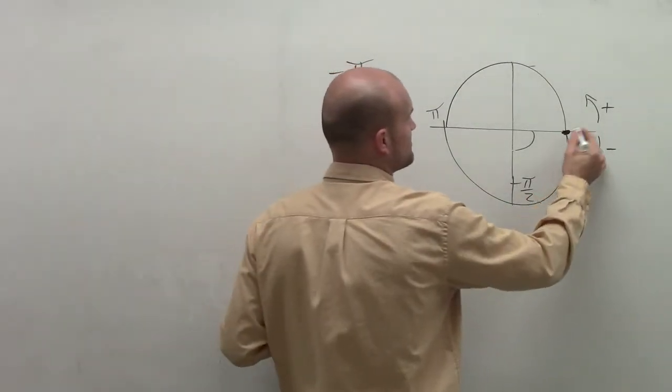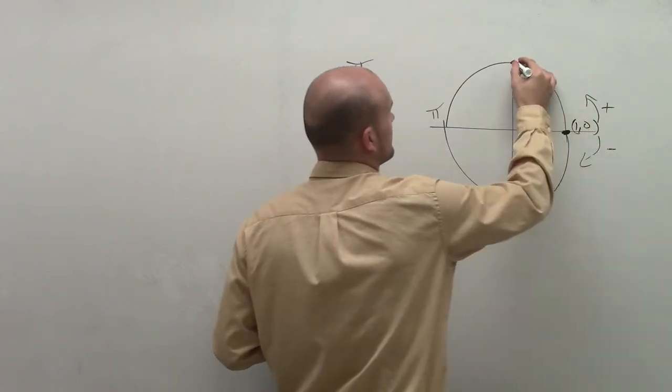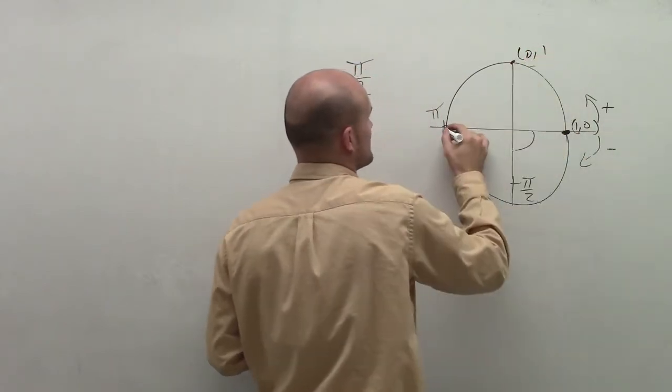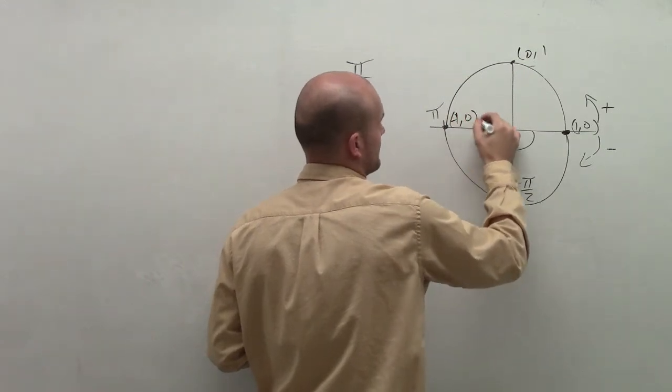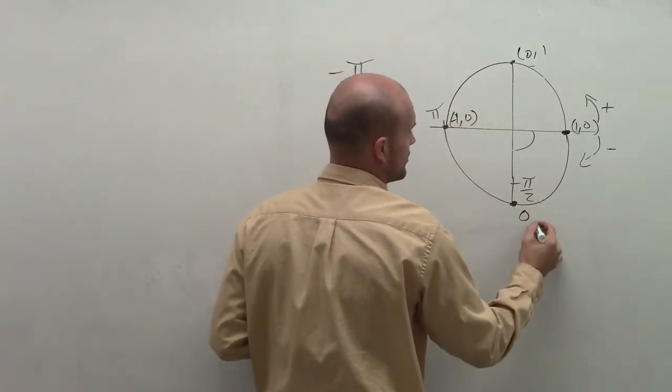Therefore, each one of these points contains 0 and 1. And this point would be 0, comma, negative 1.